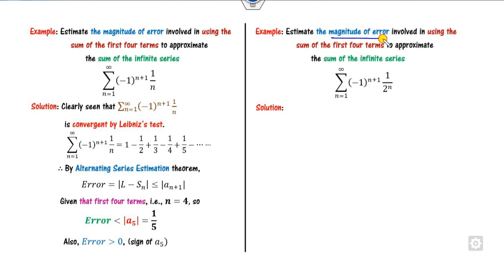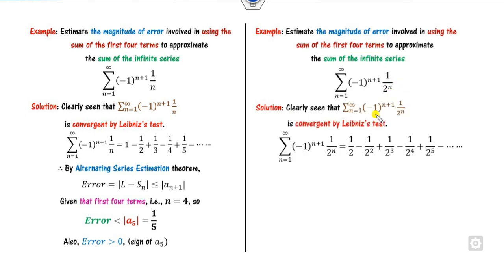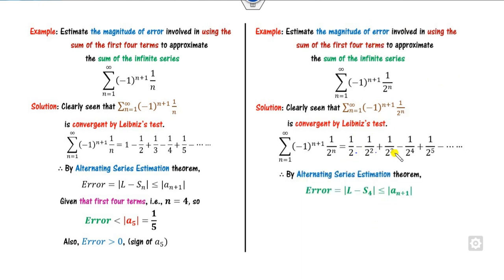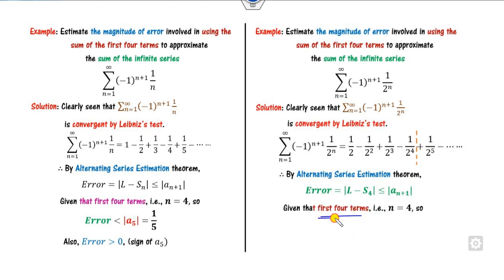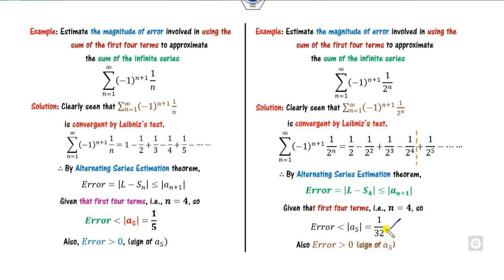Look at another example. Again, find the magnitude of the error up to four terms of the infinite series. Firstly, you have to prove convergence using the Leibniz test. Here a_n is 1 over 2 raised to power n. Clearly 1/2^n satisfies the Leibniz test conditions, so the series is convergent. With four terms considered — n = 1, 2, 3, 4 — the first unused term is 1 over 2 raised to power 5, which is 1/32. The error is less than 1/32, and the nature of the error is positive.